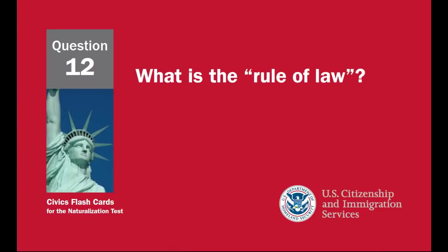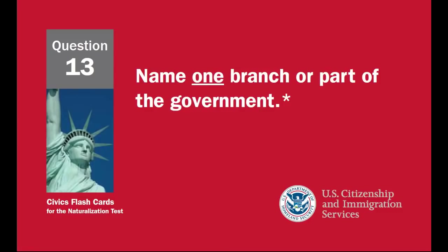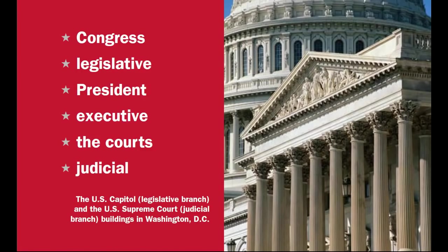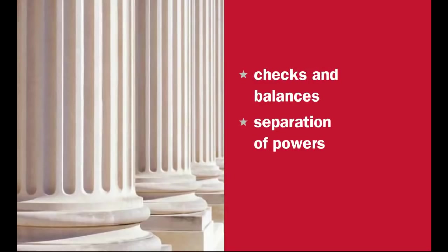What is the rule of law? Everyone must follow the law. Leaders must obey the law. Government must obey the law. No one is above the law. Name one branch or part of the government: Congress, legislative, president, executive, the courts, judicial. What stops one branch of government from becoming too powerful? Checks and balances, and separation of powers.